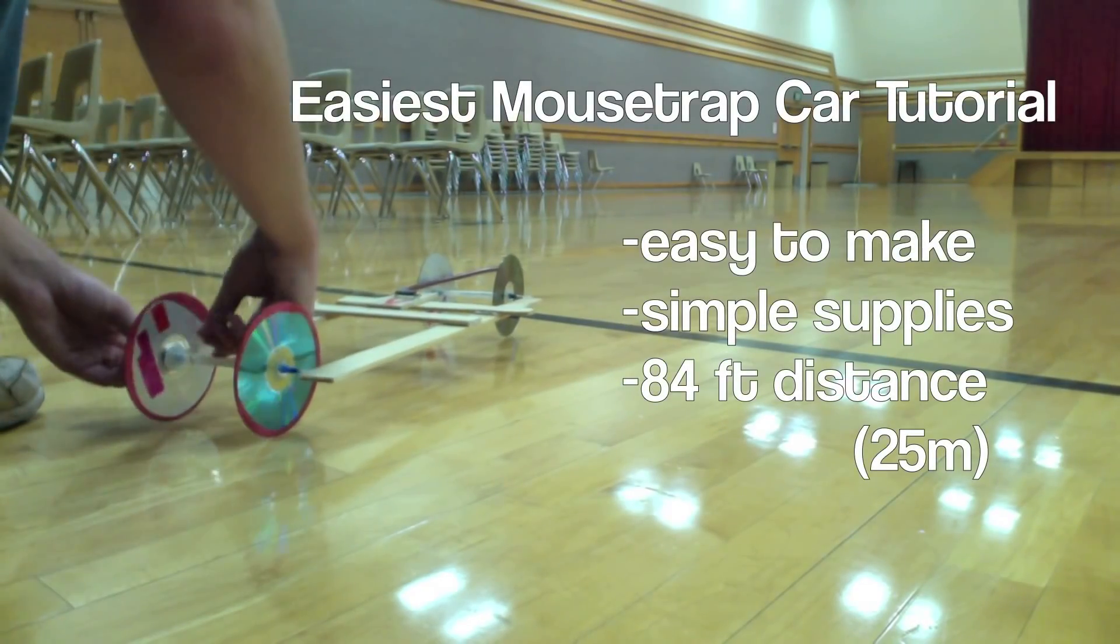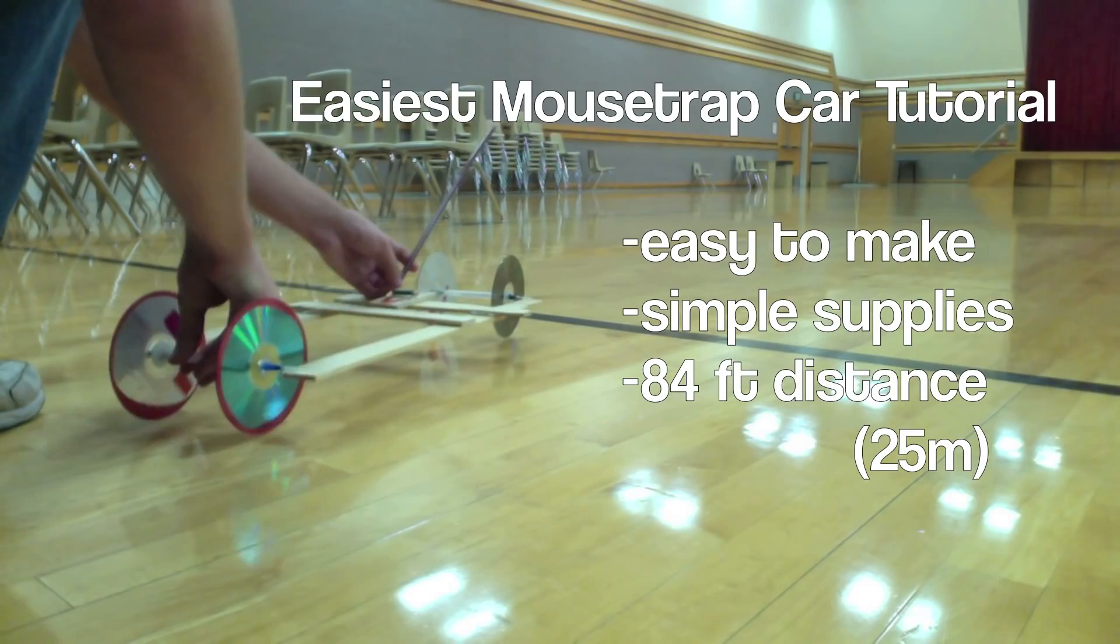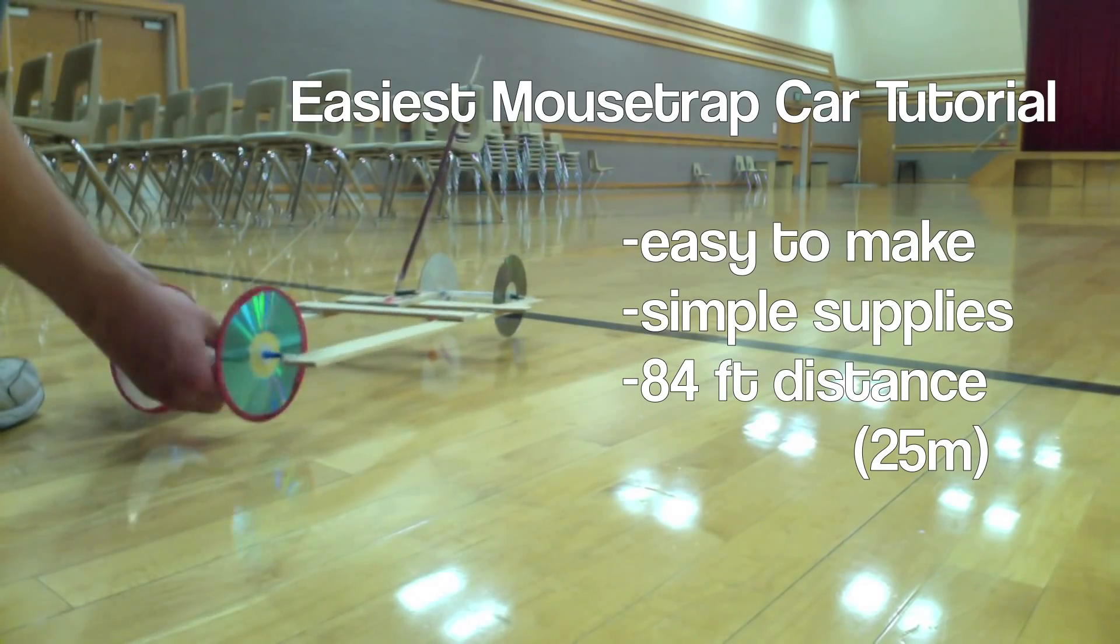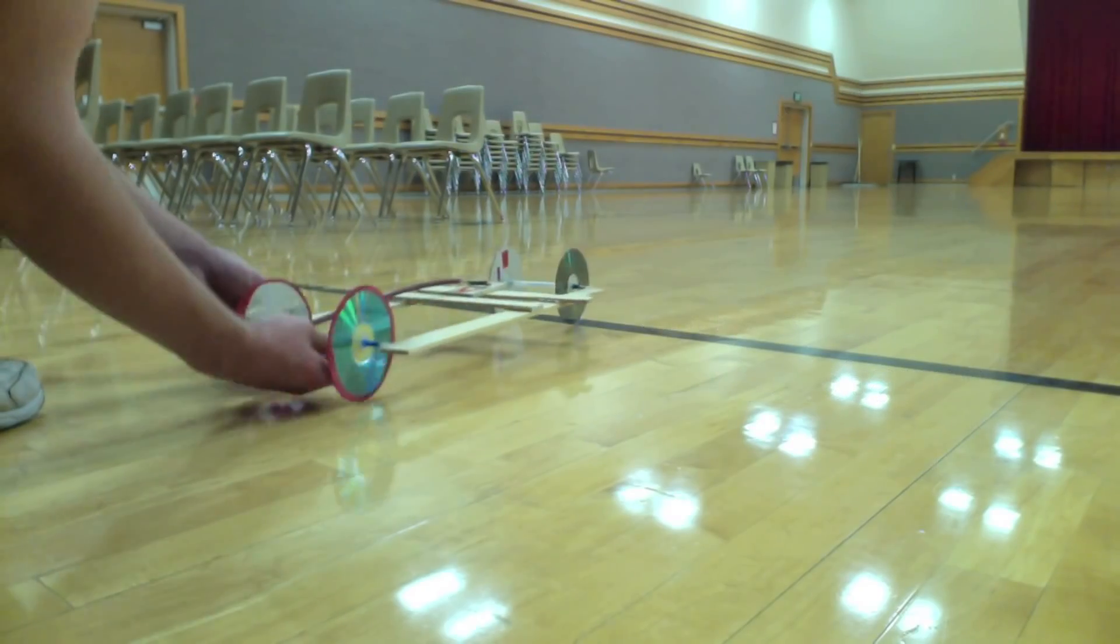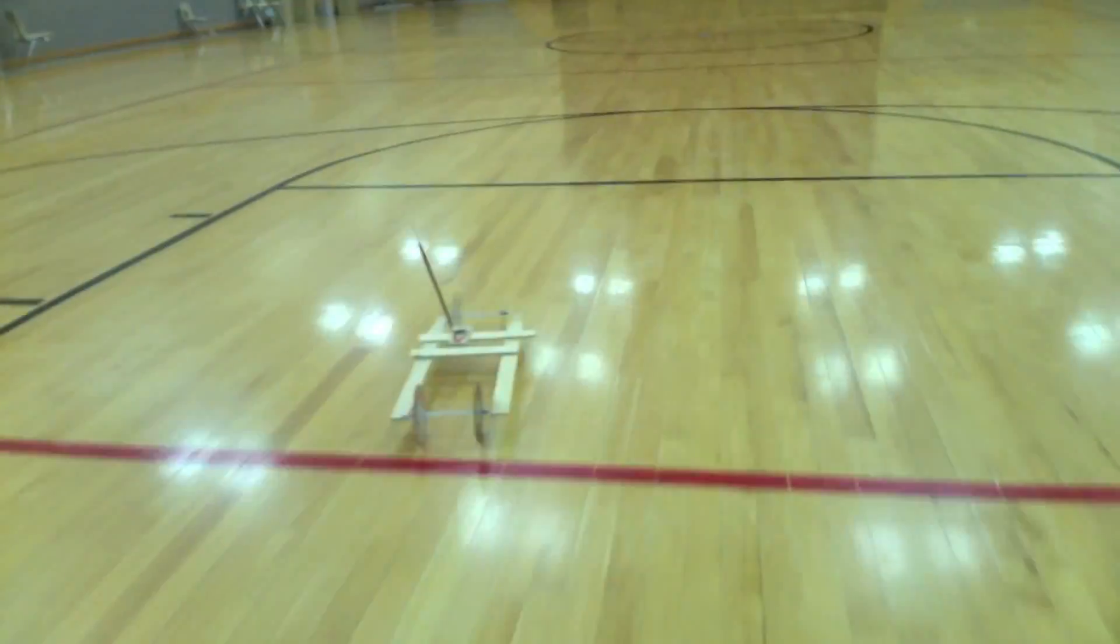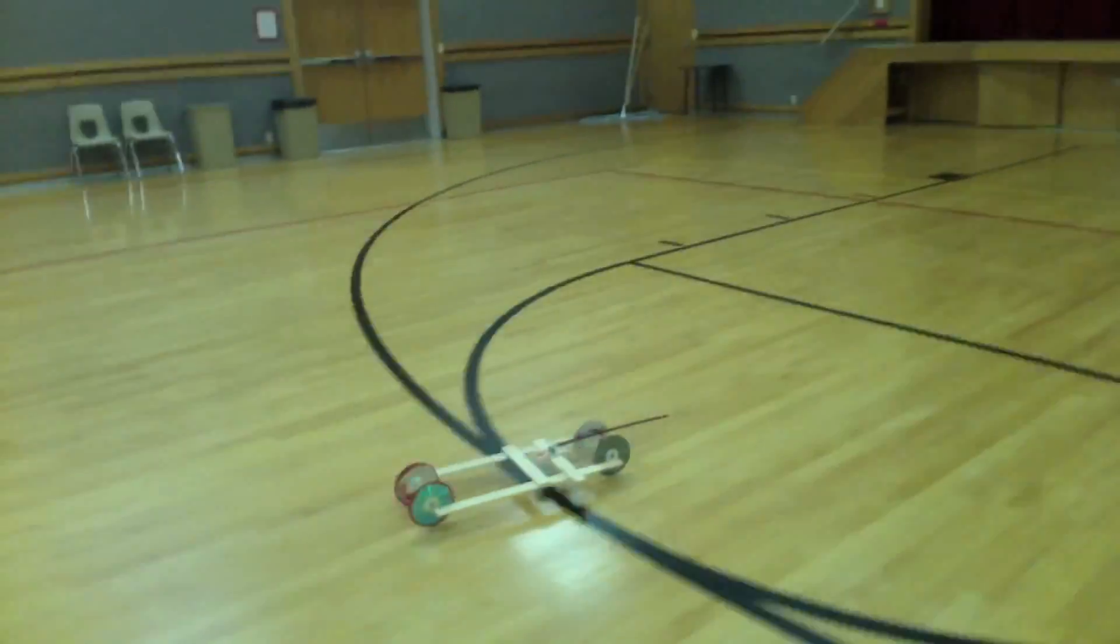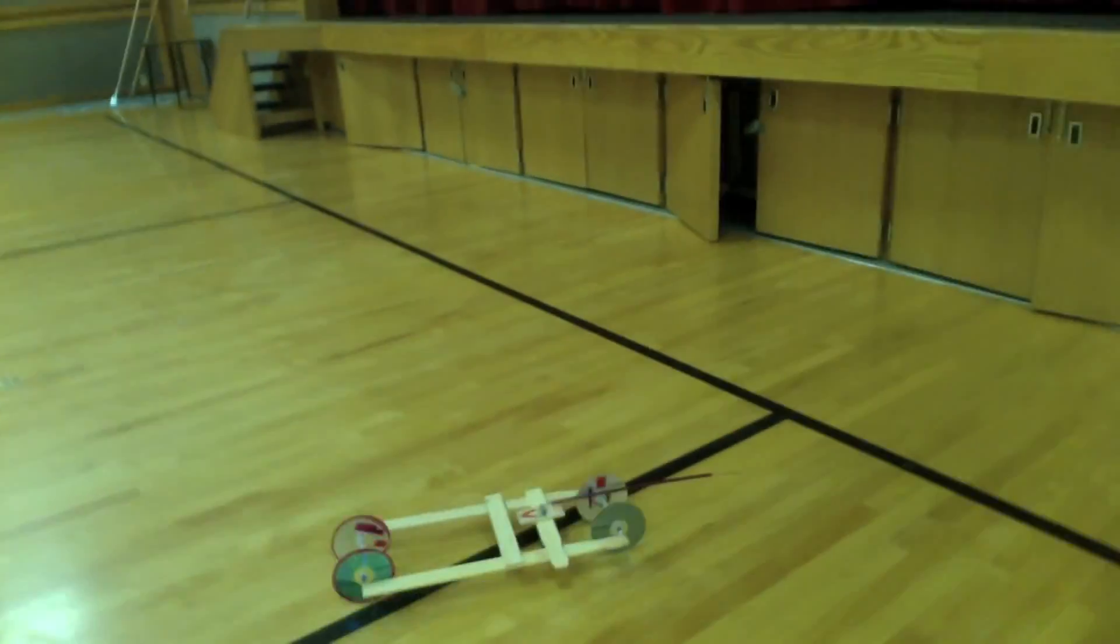Hello YouTube, this is Jeg Burr with the easiest mousetrap car tutorial you will find online. This car takes less than an hour to make and is designed for building at 2 a.m. before your physics project is due. It goes 84 feet using only supplies you can easily find at home. I'll walk you through step by step on how to build it.